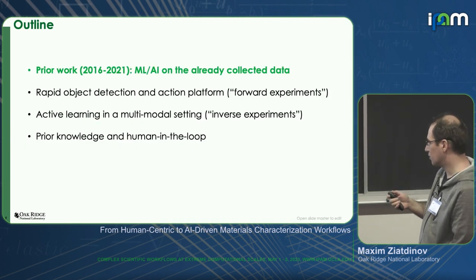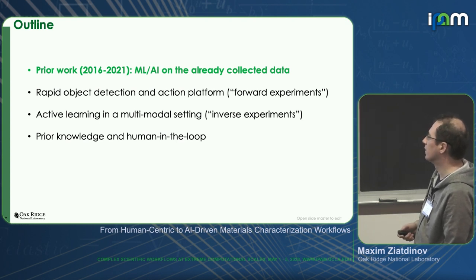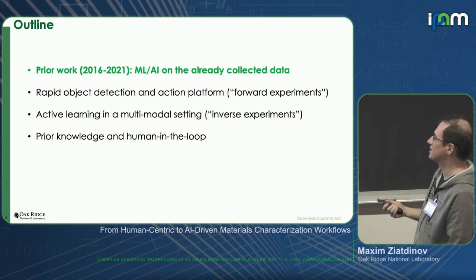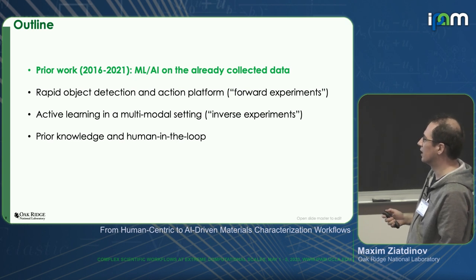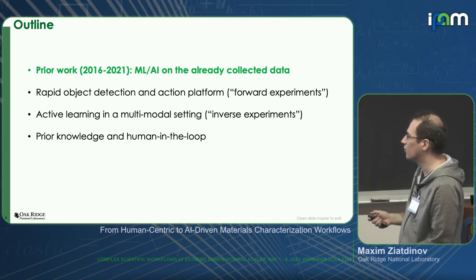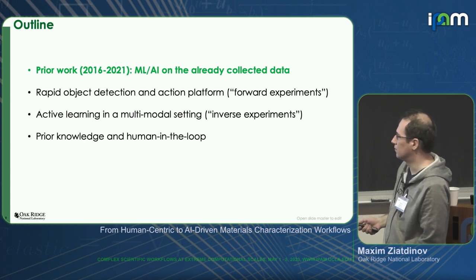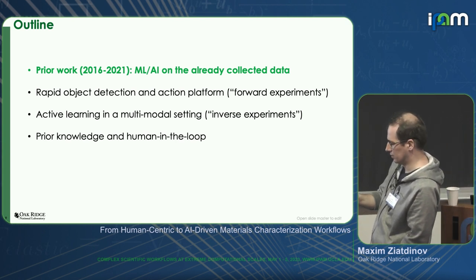Here is an outline of my talk. I'll briefly describe efforts on offline analysis — how AI and ML can help get insights from already-collected data. Then I'll talk about what I call forward experiments, which is a rapid object detection and action platform. Then we'll move to so-called inverse experiments, which is active learning in the multimodal setting. And if I have time, we'll talk about incorporation of prior knowledge and human-in-the-loop.